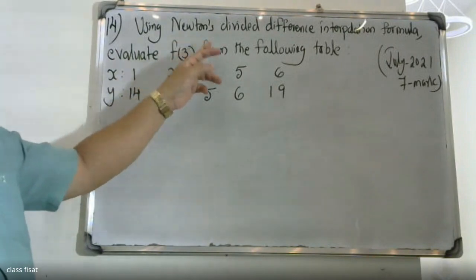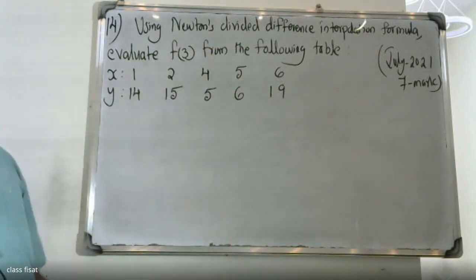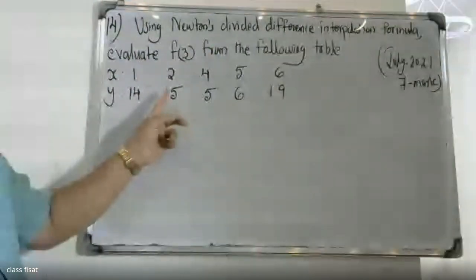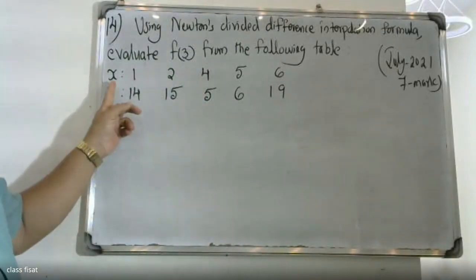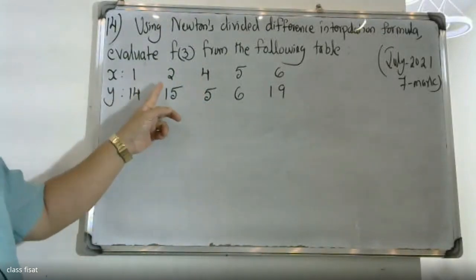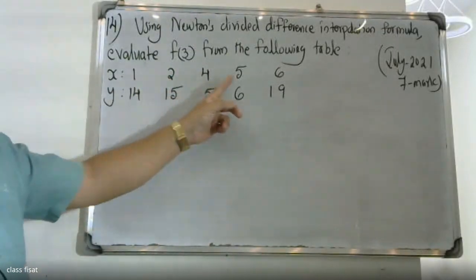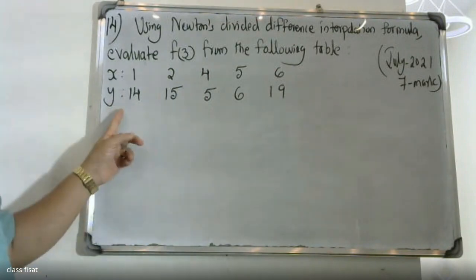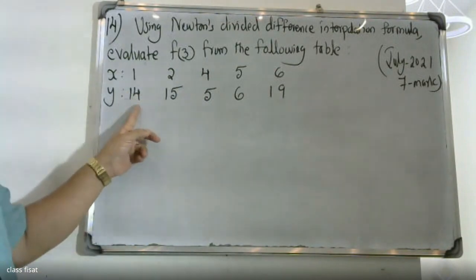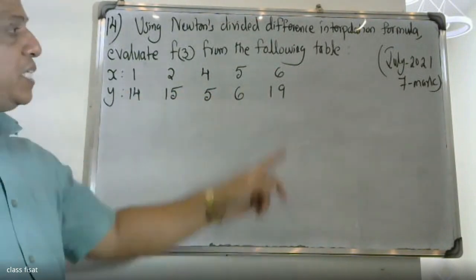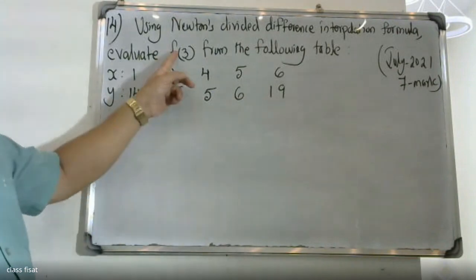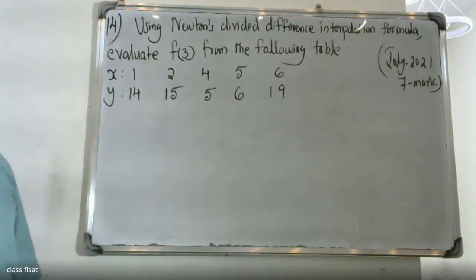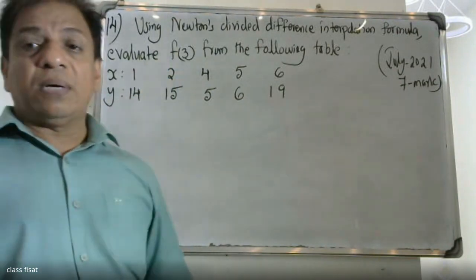Using Newton's divided difference interpolation formula, evaluate F(3) from the following table. The X values are 1, 2, 4, 5, 6 and the corresponding Y values are 14, 15, 5, 6, and we need to find the Y value at X equals 3.